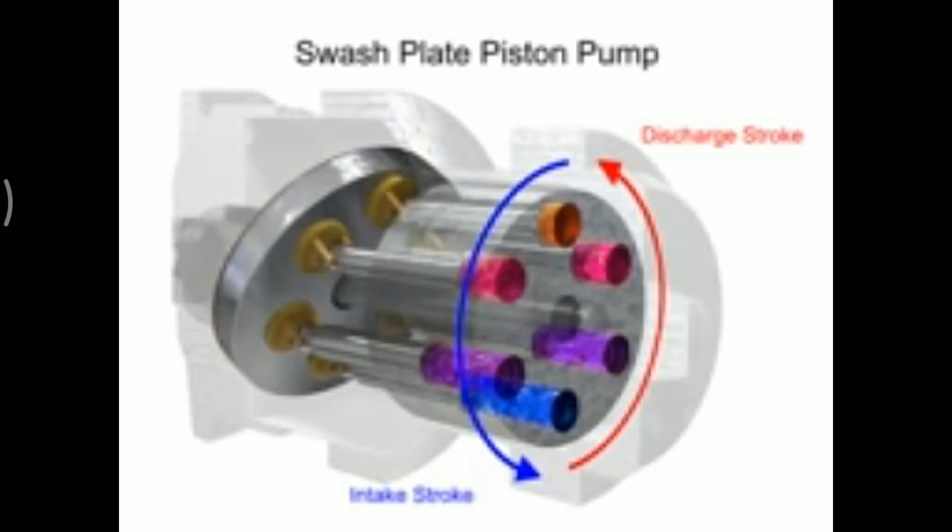Piston pumps, in general, are manufactured with closer internal fits than other pumps. This means that internal slippage can be less so that they operate with reasonable efficiency at pressures both too high or too low for the operation of other pumps.